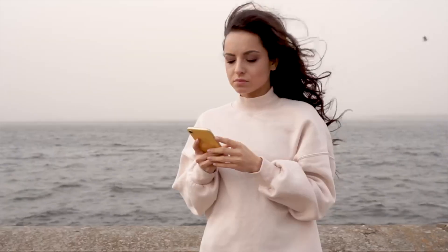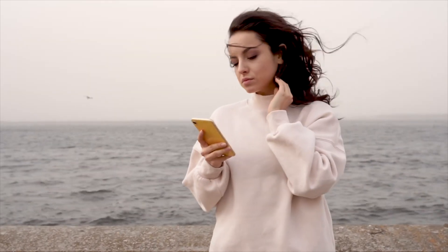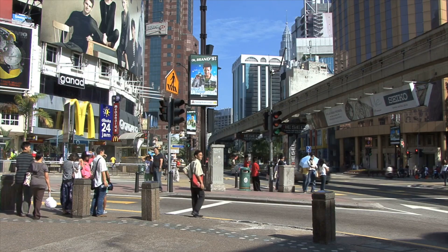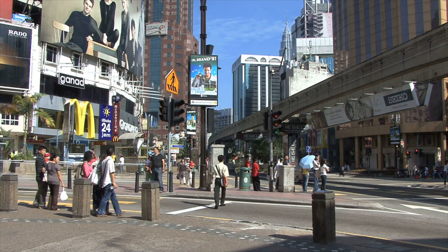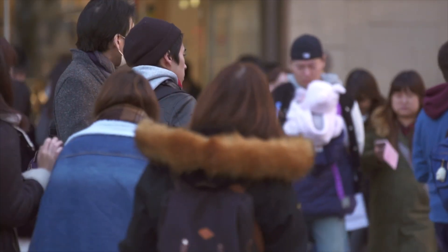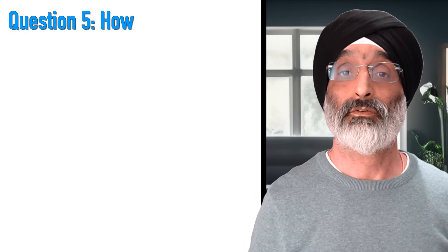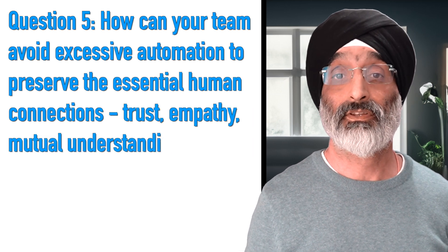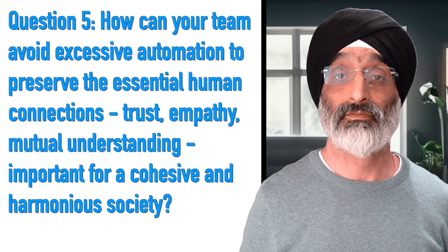AI's ability to personalise digital experiences offers exciting potential for enhancing consumer life and service delivery, but it also raises some concerns. For example, excessive automation could reduce human interactions, while hyper-personalisation might isolate people from diverse perspectives, potentially polarising social connections. Normally the foundations of well-ordered societies lie in trust, empathy and mutual understanding, all of which risk erosion with the widespread adoption of AI technologies. So how can your team avoid excessive automation to preserve the essential human connections — trust, empathy and mutual understanding — important for a cohesive and harmonious society?